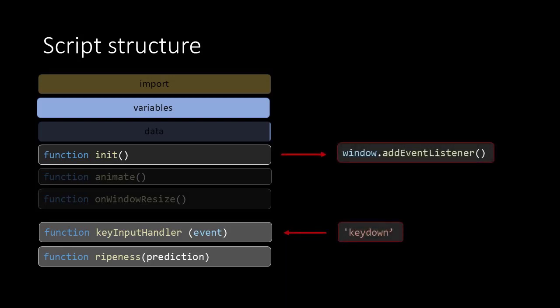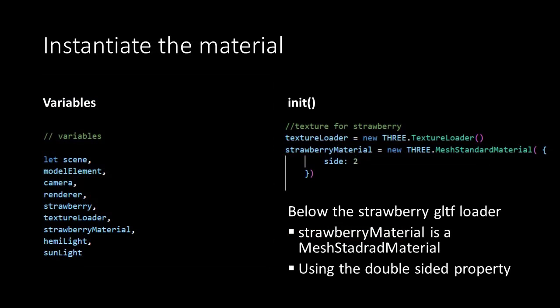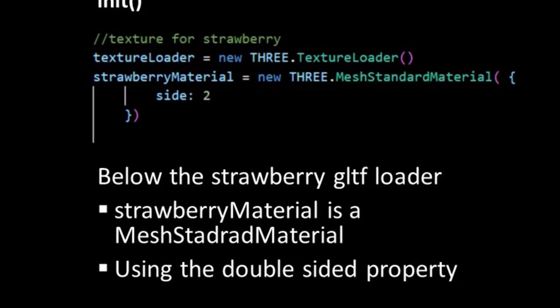Further we'll add two new functions: the ripeness function that takes in the prediction, and the key input handler. We start by adding the variables textureLoader and strawberryMaterial. In the init function the variables are defined. TextureLoader is an instance of the Three.js TextureLoader and the strawberryMaterial is an instance of the MeshStandardMaterial. For now we only set the property sides to 2. This means that the textureLoader and strawberryMaterial are now ready for use in the ripeness function.